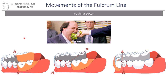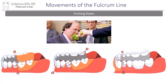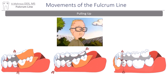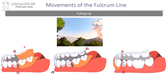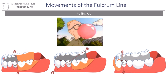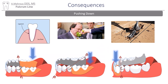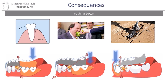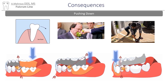Rotation of the partial happens when pressure occurs tissue wards in the distal extension area, or when sticky substances tend to pull the denture base upwards causing rotation in the other direction. If no appropriate clasp selections were made, that rotation can have detrimental effects on the abutment teeth.